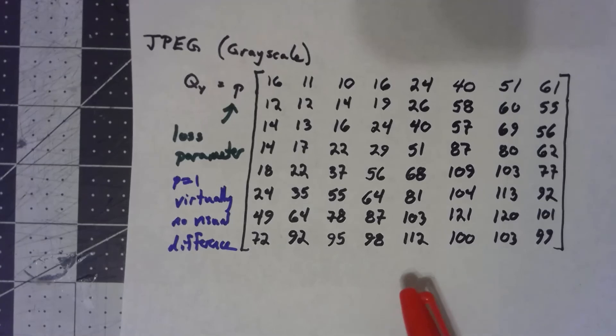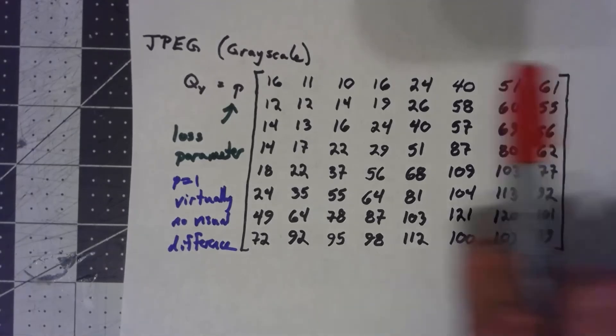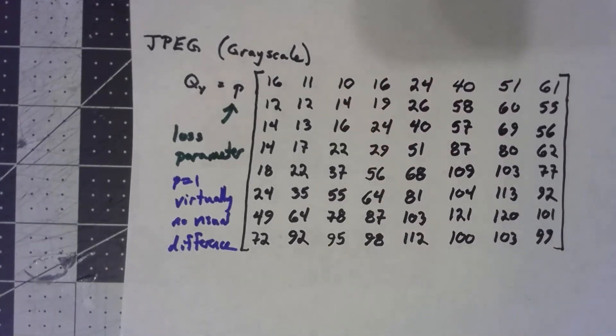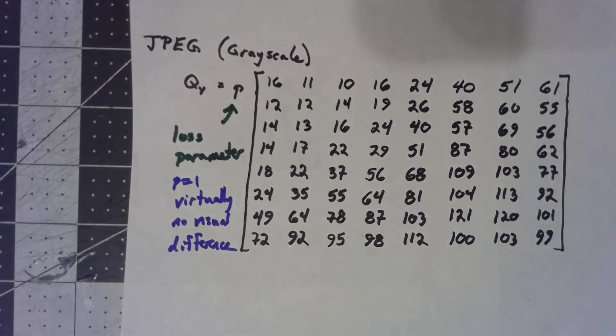Before I get there, though, this quantization matrix we've got here is specifically for grayscale images. Things work differently with color. In fact, there's a number of things we should talk in terms of color. And I think that's what the next video is going to be about.